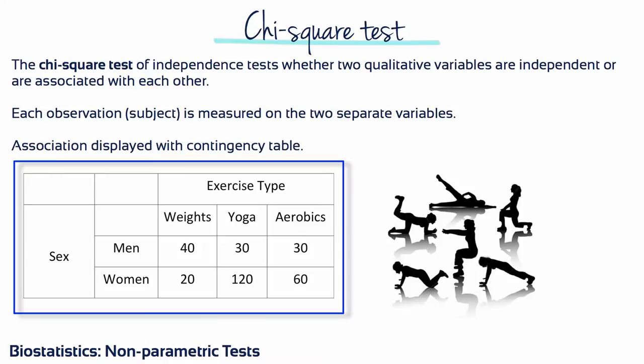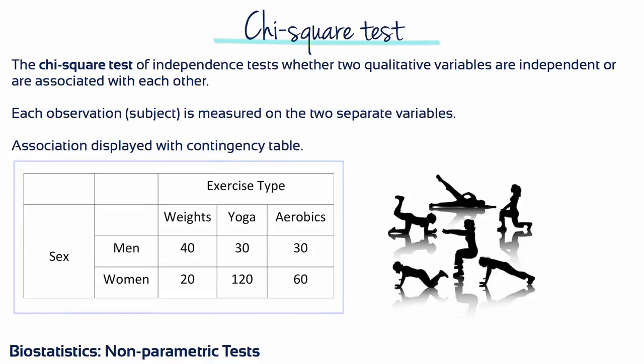Suppose 300 people who exercise are asked what type of exercise they perform. We want to know: is there an association between sex and exercise preference? Of the 100 men asked, 40 performed weight training, 30 do yoga, and 30 aerobics. Of the 200 women queried, 20 used weights, 120 do yoga, and 60 aerobics. You can display these frequencies in a contingency table.